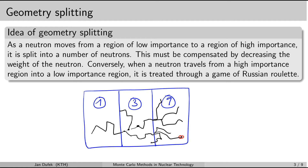From this idea, you can see that for the geometry splitting method it is the ratio of the importance between different parts of the system that really matters. The absolute values of the importance numbers are not important. You could divide all the numbers by the same factor and the method would work just the same, because the ratios would not be affected.